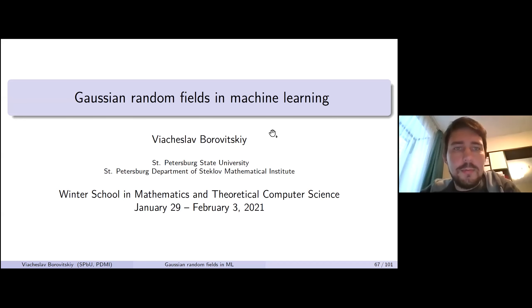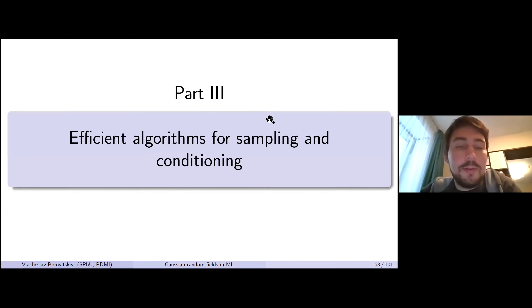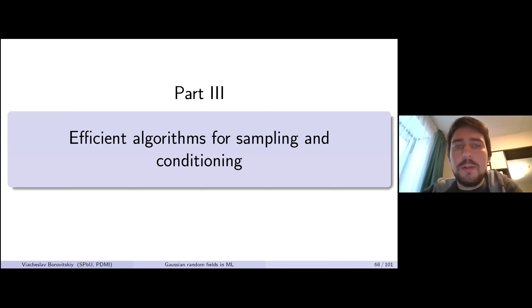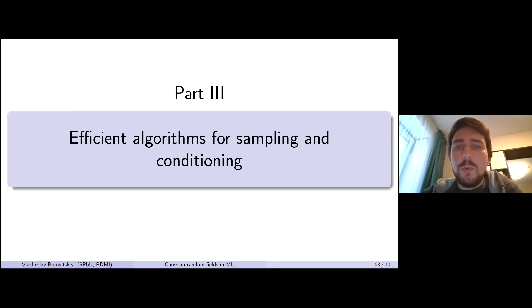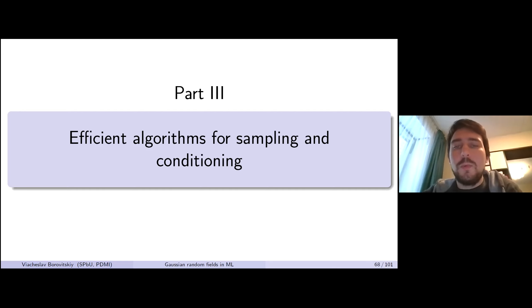Welcome to the last lecture in this course on Gaussian random fields in machine learning. Today we will talk about efficient algorithms for sampling and conditioning Gaussian processes. Last time we saw simple algorithms for sampling from Gaussian processes, conditioning them, and making predictions, but they have unfavorable computational complexity. In this talk I will explain how we can build more efficient algorithms, which leads to a slight loss of accuracy because they are all built on the idea of approximating the process.